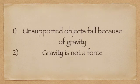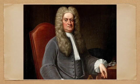Einstein's position was, unsupported objects fall because of gravity, but gravity is not a force. Of course, all of us in school were taught that gravity is a force, so how can this be? Let's look at it from the historical perspective.